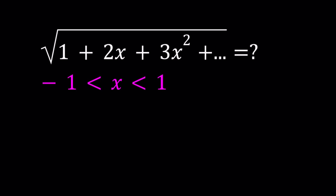Notice here that the power of x is 1 less than the coefficient that multiplies it. I'm going to be presenting two methods. Let's start with the first one.